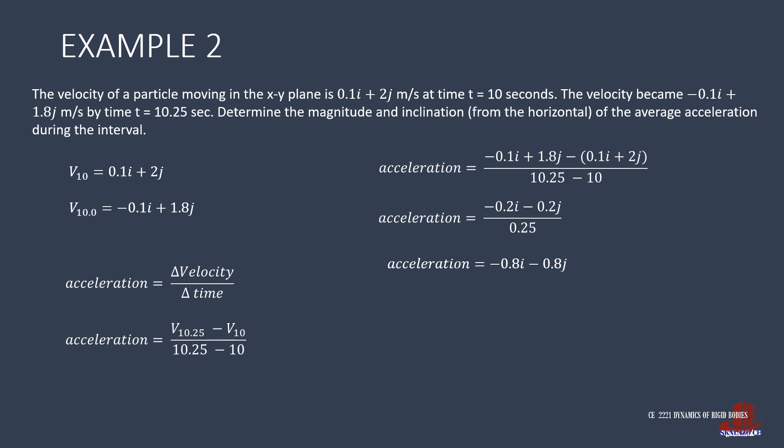The magnitude of the acceleration is the root of negative 0.8 squared plus negative 0.8 squared, which reduces to 0.8 times root of 2, or 1.13 meters per second squared. The inclination is the inverse tangent of negative 0.8 over negative 0.8, which still gives 45 degrees.